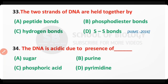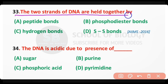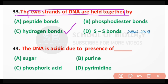Question number 33: The two strands of DNA are held together by — peptide bond, phosphodiester bond, hydrogen bond, or disulfide bond? The correct answer is option C: the two strands of DNA are held together by hydrogen bonds. Two hydrogen bonds are present between adenine and thymine, while three hydrogen bonds are present between guanine and cytosine.